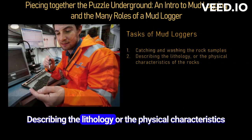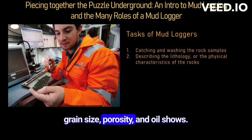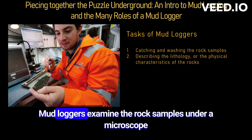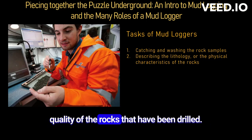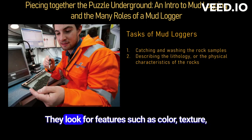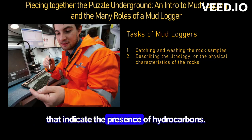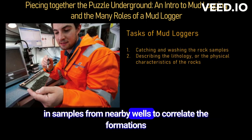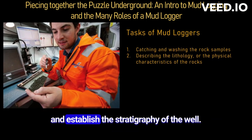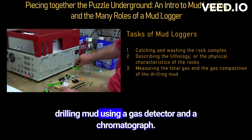Mud loggers describe the lithology — the physical characteristics of the rocks — such as color, texture, grain size, porosity, and oil shows. They examine rock samples under a microscope and under ultraviolet light to identify the type and quality of the rocks drilled, looking for features such as cementation, fossils, and oil shows that indicate the presence of hydrocarbons. They also compare rock samples with reference charts and samples from nearby wells to correlate formations and establish the stratigraphy of the well.